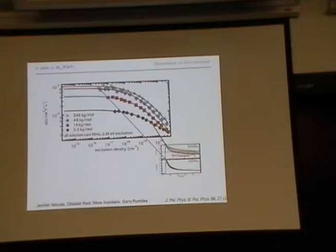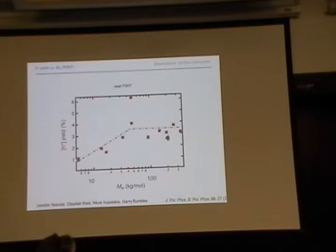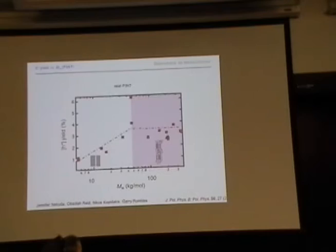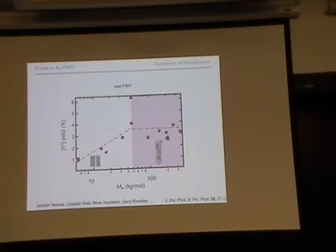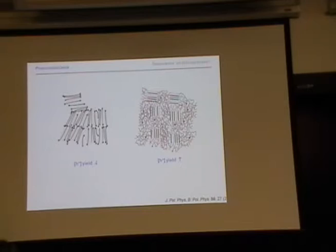So again, same material — the only thing we change is the length. When we plot the charge generation yield, because we assume the mobility is the same, what is striking is you see a linear dependence where we know we don't have entanglement. Once, very similar to charge carrier mobility in OFETs, we have this entanglement and we get to this two-phase semicrystalline structure, the charge generation yield stays the same. So polymers again seem better performing in this sense.